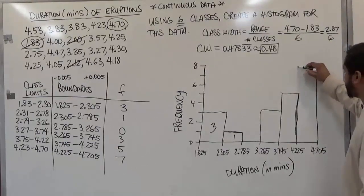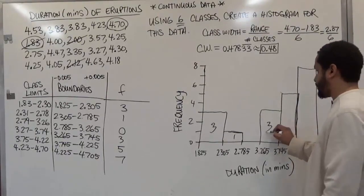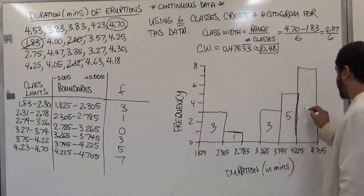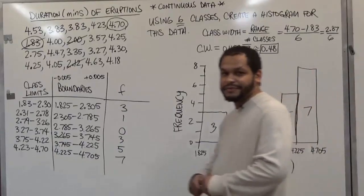And the final one has a 7 here. So we're just going to go up to 7 and box that in. So this has a 3. This has a 5. This one has a 7. Thank you.